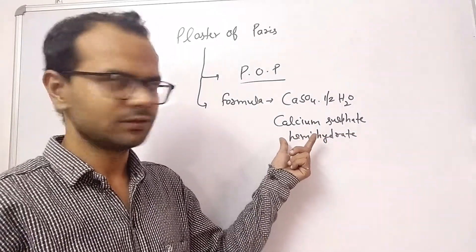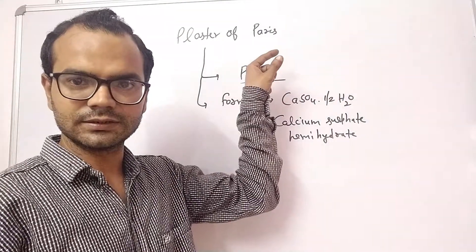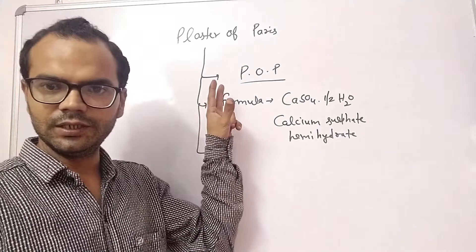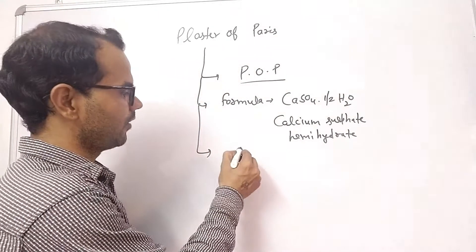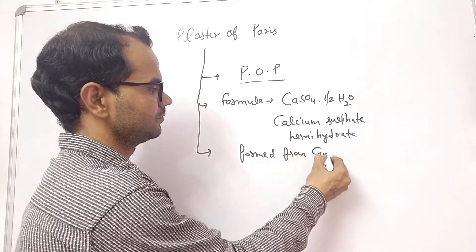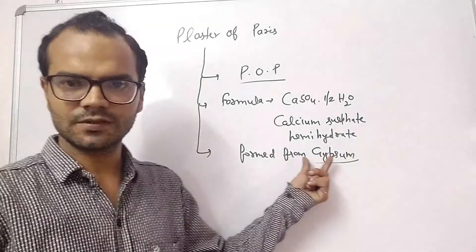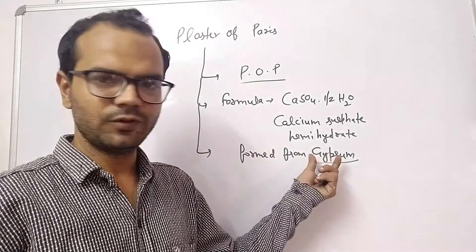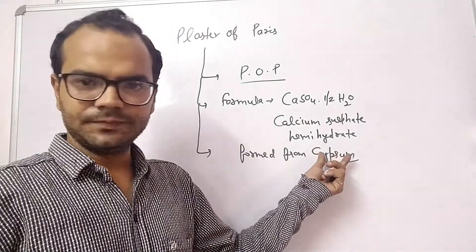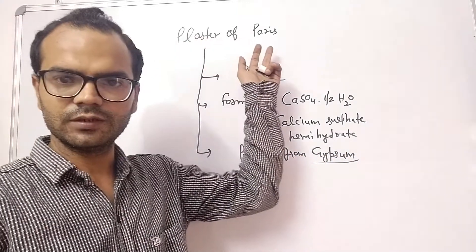The first question is: why is it called Plaster of Paris? It is called so because it is mainly obtained from gypsum, which is abundantly found in Paris. Since gypsum is found in abundance in Paris, the compound derived from it is called Plaster of Paris.